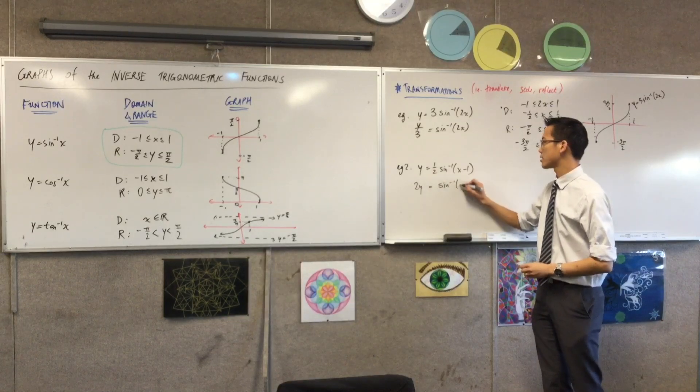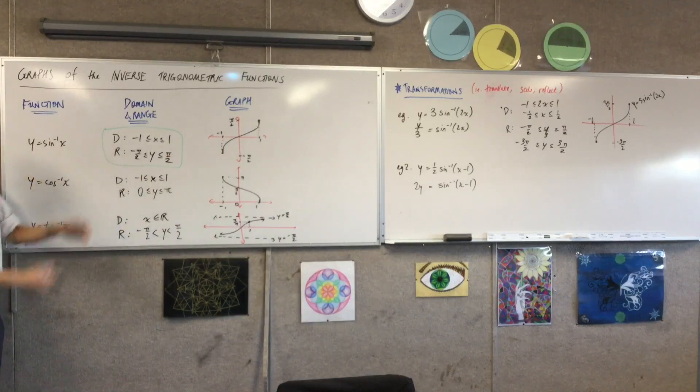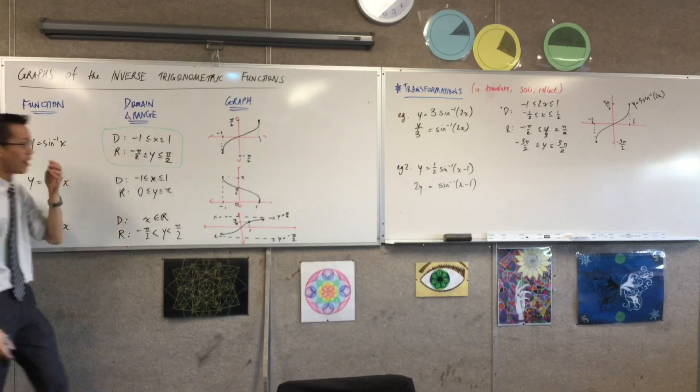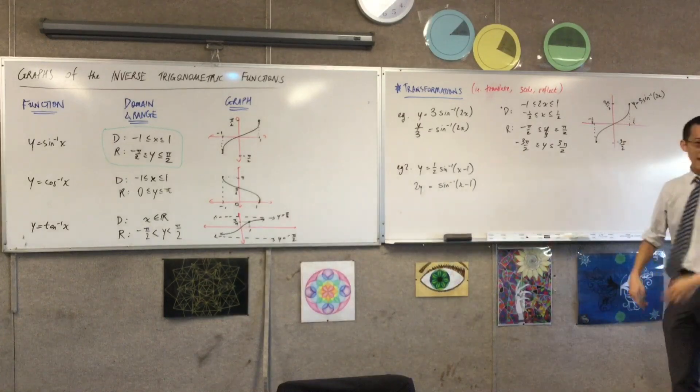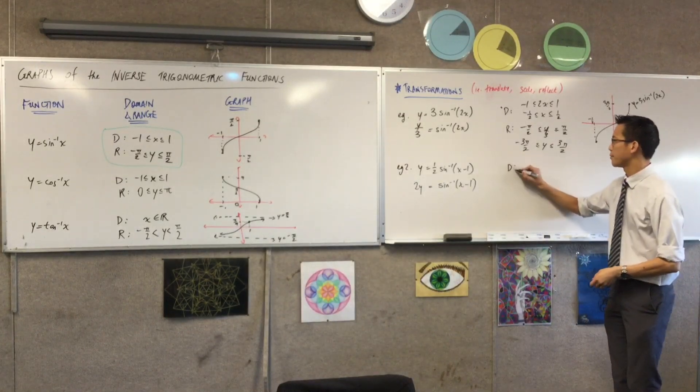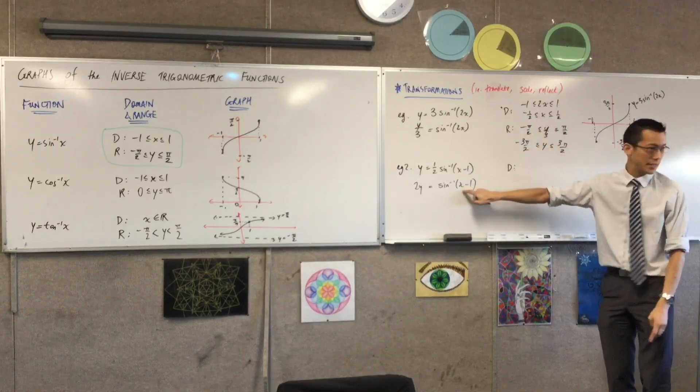All right, so now I've got this. Now, this is the strength of using this, just remembering this domain and range thing. Not only does it help you remember this better, but you almost don't have to think in this case. Again, to work out a domain, the domain is between negative one and one for whatever this is. Now, instead of x or 2x, I have x take away one.